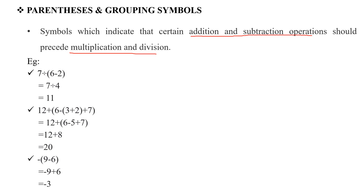Now we will take examples. For example, 7 divided by the bracket (6 - 2). Here we have a bracket. We will first consider the bracket and apply the BODMAS rule. We will first solve the bracket: 6 - 2 = 4. Then we do 7 divided by 4, which gives us 11.